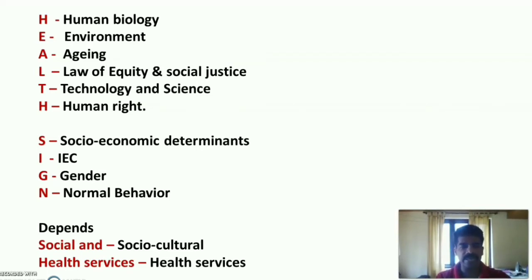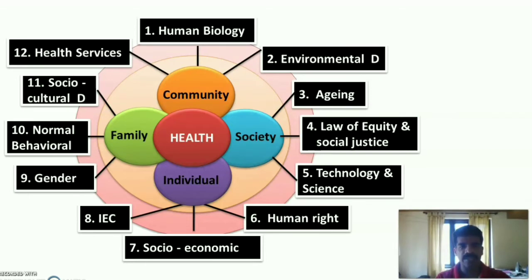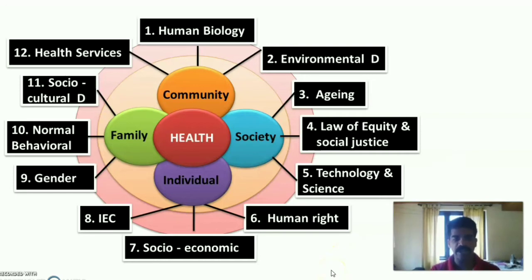There are 12 major determinants or factors influencing our health. First: human biology. Second: environmental determinants. Third: aging. Fourth: law of equity and social justice. Fifth: technology and science. Sixth: human right. Seventh: socio-economic determinants. Eighth: IEC. Ninth: gender. Tenth: normal behavior. Eleventh: socio-cultural or cultural determinants. Twelfth: health services.